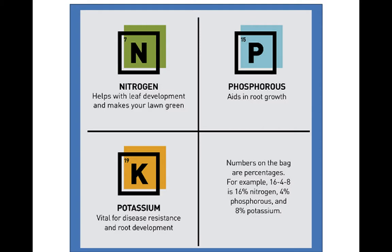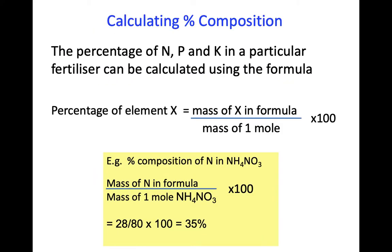If you went to a garden centre to buy fertilisers to help your plants grow, there are numbers on the back of fertiliser packets which give percentages for how much nitrogen, phosphorus and potassium are present. For example, 16, 4, 8 would mean 16% nitrogen, 4% phosphorus and 8% potassium. These percentages come from calculating the percentage composition. The percentage of nitrogen, phosphorus and potassium in a particular fertiliser can be calculated using the formula: percentage of your chosen element equals the mass of your element in the formula divided by the mass of one mole, multiplied by 100.